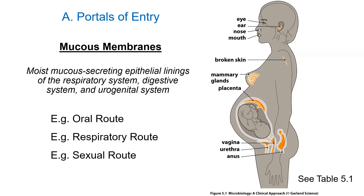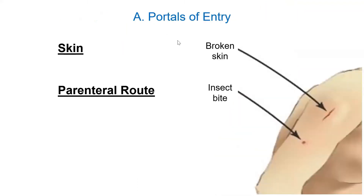The skin is also a portal of entry, though it often has to be broken — by a scratch, insect bite, or intravenous needle. A number of organisms can penetrate the skin and cause infections. There's also the placental route — a small list of organisms that can travel from mother to baby, including some that actually invade the placenta during pregnancy. Many transmission cases occur during childbirth. Cat scratch disease is another example of skin portal infection.